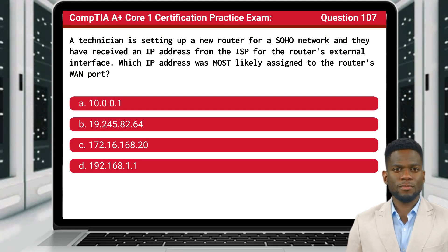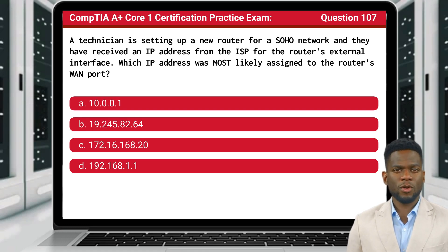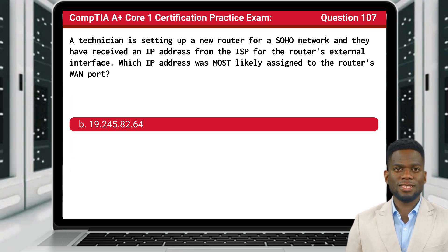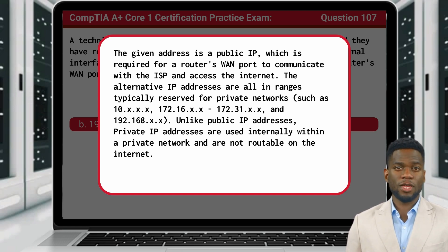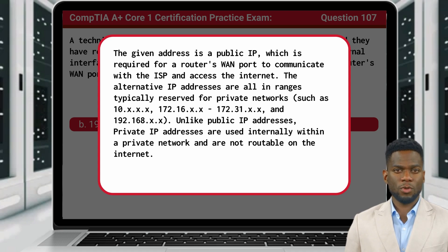Question 107: A technician is setting up a new router for a SOHO network and has received an IP address from the ISP for the router's external interface. Which IP address was most likely assigned to the router's WAN port? The answer is B: 19.245.82.64. This is a public IP, which is required for a router's WAN port to communicate with the ISP and access the Internet. The alternative IP addresses are all in ranges reserved for private networks, which are not routable on the Internet.